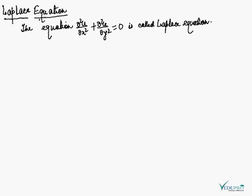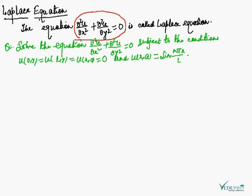The Laplace equation ∂²u/∂x² + ∂²u/∂y² = 0 is called the Laplace equation. We are going to solve it under boundary conditions: u(0,y) = u(L,y) = u(x,0) = 0, and u(x,a) = sin(nπx/L).